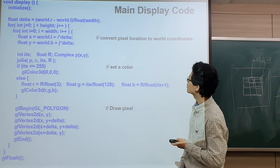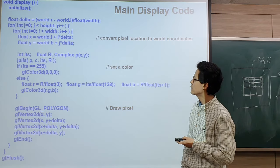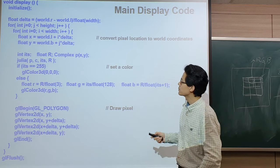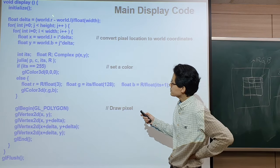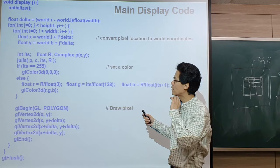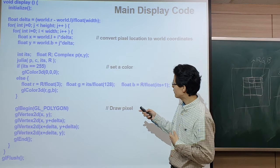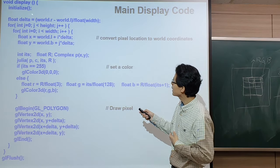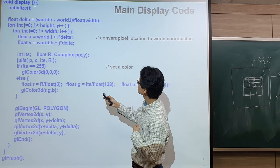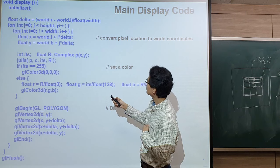This is actually the main display code. It looks complicated, but overall it is very simple. Whenever we need to draw our screen again, we call this display function. Then we initialize it and compute the delta value, which is the per-pixel world width — the world width divided by the screen width.